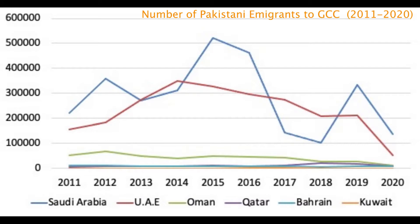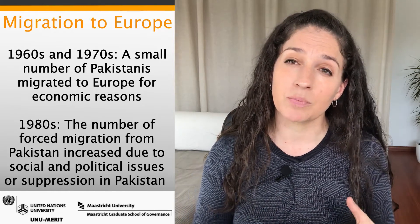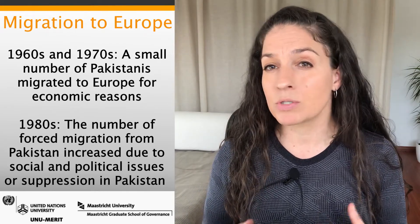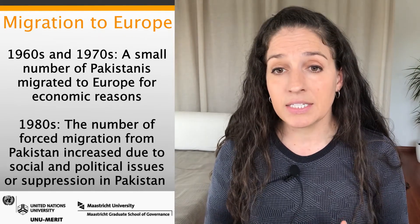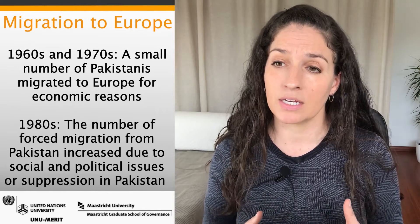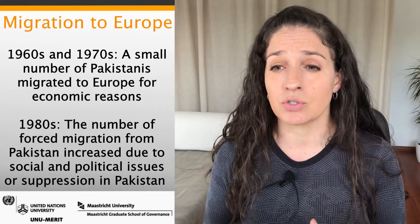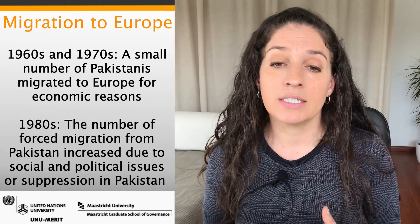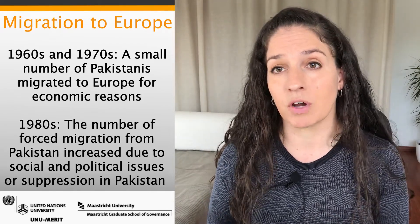Migration to Europe started with very small numbers in the 1960s and 70s, mainly for economic reasons. In the 1980s, the number of forced migrants moving to Europe increased due to social and political suppression in Pakistan. In the early 1990s, the EU saw its first flows of irregular migration from Pakistan.